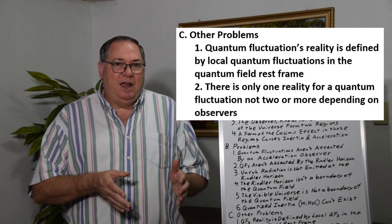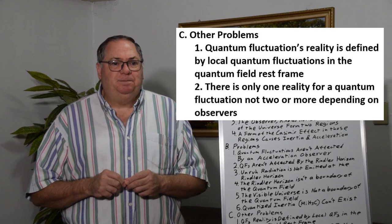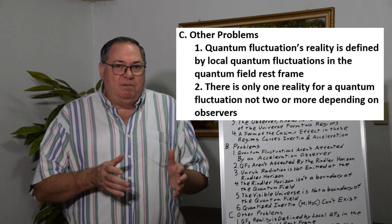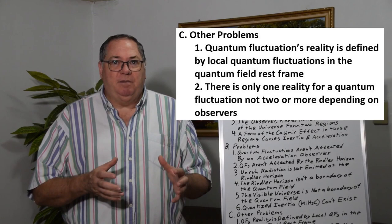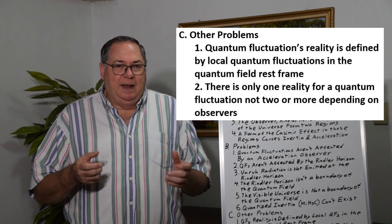But if you have a rest frame, then you have to base reality on what's happening in the rest frame first and foremost, and then extrapolate into other frames of reference. Because there is a rest frame and quantum fluctuations, reality is defined by the interactions in the rest frame, what interacts with local quantum fluctuations.